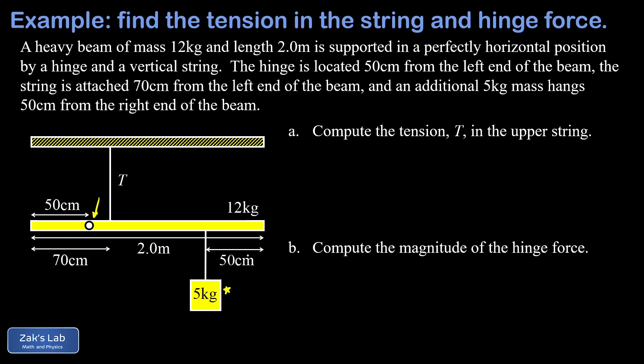So there's a lot of labeling going on. Our hinge is located 50 centimeters from the left end but the string is attached 70 centimeters from the left end and that means this little gap right here between the hinge and the vertical string is 20 centimeters and we're going to need that in our calculations and then the hanging mass is suspended 50 centimeters from the right end.